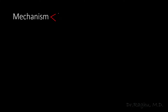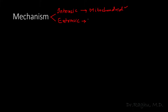Apoptosis is classically divided into two pathways. The first is the intrinsic pathway, also called the mitochondrial pathway, because it occurs via the mitochondria. The second is the extrinsic pathway, also called the death receptor pathway, because it occurs via the death receptor.